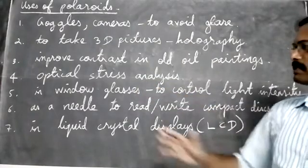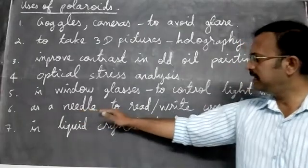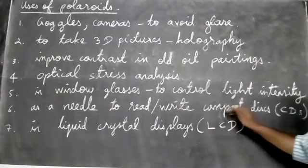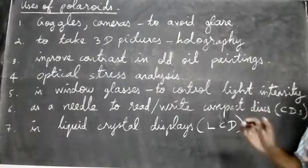The next one is polarizer is used as a needle to read or write compact discs. So polaroids are also used in compact discs (CDs) - it will read or write the information.